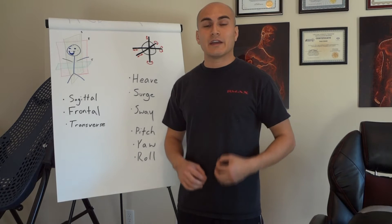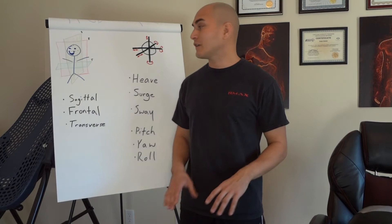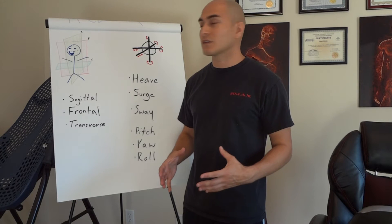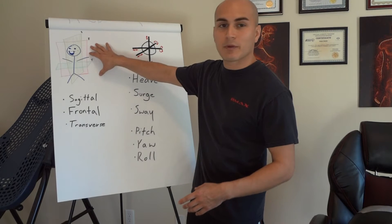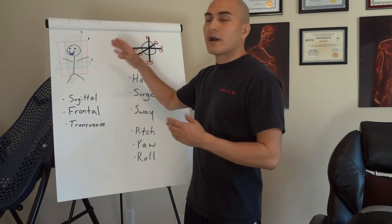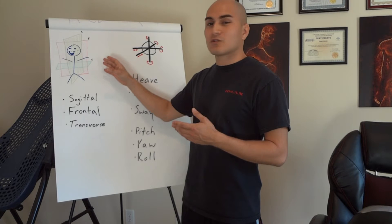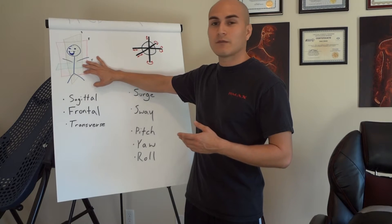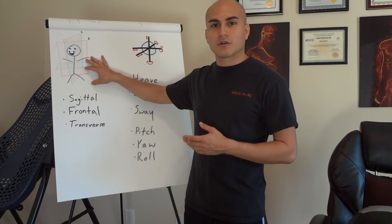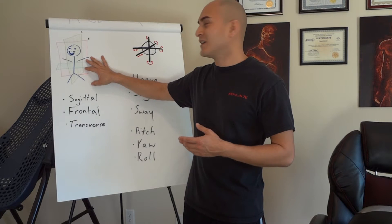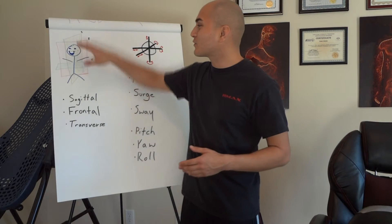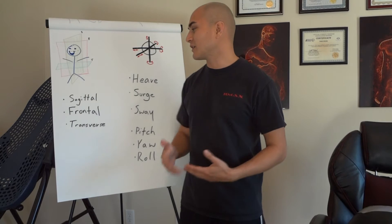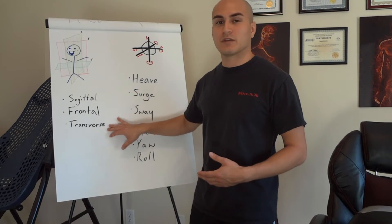The functional training model expands upon this by recognizing that life happens in three dimensions. We've got these three planes of movement that happen in life: sagittal, frontal, and transverse.